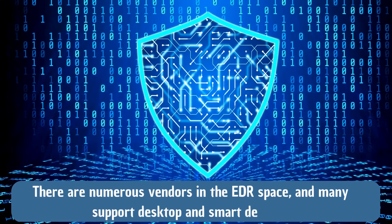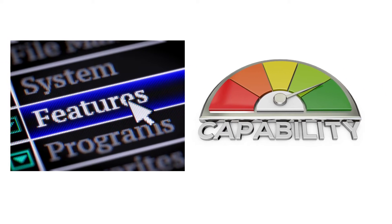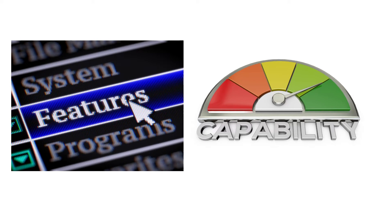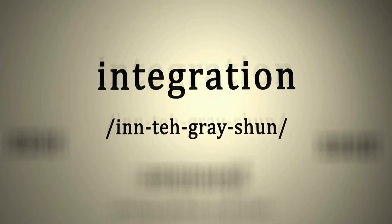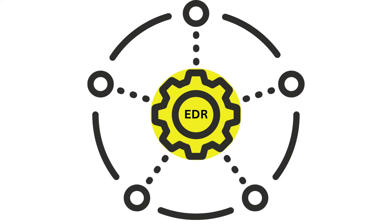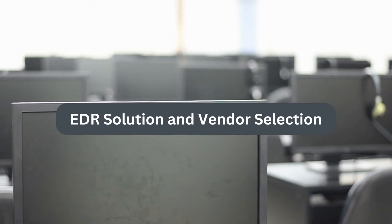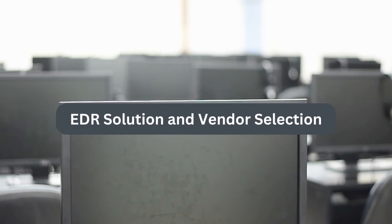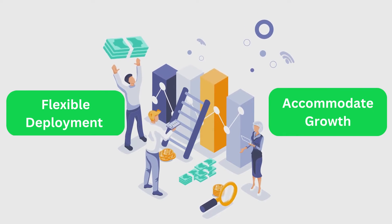There are numerous vendors in the EDR space, and many support desktop and smart devices. Each solution offers a unique set of features and capabilities, so it's important for organizations to carefully evaluate their needs before selecting an EDR solution. Integration and scalability are the two most important factors to consider. The EDR solution should integrate seamlessly with your existing security infrastructure, such as firewalls, intrusion detection and prevention systems, and security information and event management systems. It should also be able to scale to meet the needs of your organization regardless of its size or complexity — look for a vendor that offers flexible deployment options and can accommodate growth.